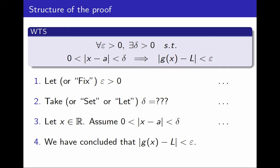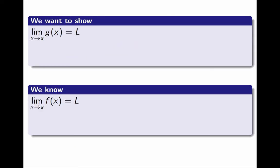Before going any further, one more reminder. During the proof, we are going to use the definition of the limit for g on the one hand, and for f and h on the other hand, but we'll use them in a very different way. Because we are trying to prove that the limit of g is L, but we are assuming that the limit of f is L, and also the limit of h. Why does this matter? In the case of g, we want to show the limit is L. Think about the definition. For every epsilon, there exists a delta, etc.